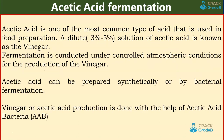Acetic acid fermentation. Acetic acid is one of the most common types of acids used in food preparation. A dilute 3 to 5% solution of acetic acid is known as vinegar, while 100% acetic acid is known as glacial acetic acid. Fermentation is conducted under controlled atmospheric conditions for the production of vinegar. Acetic acid can be prepared synthetically or by bacterial fermentation. Vinegar or acetic acid production is done with the help of acetic acid bacteria, also known as AAB.